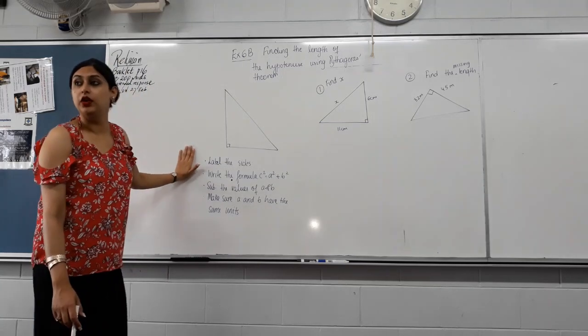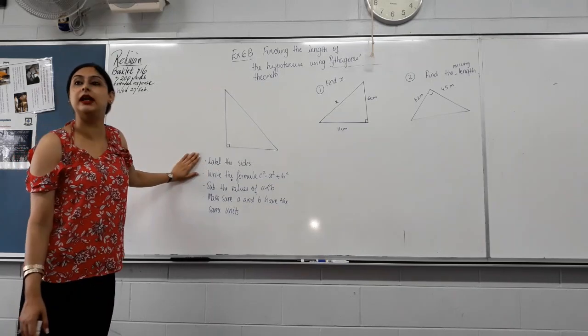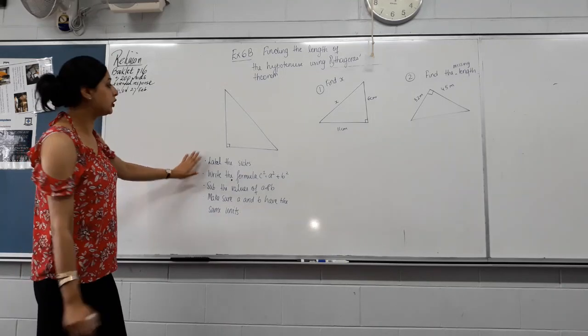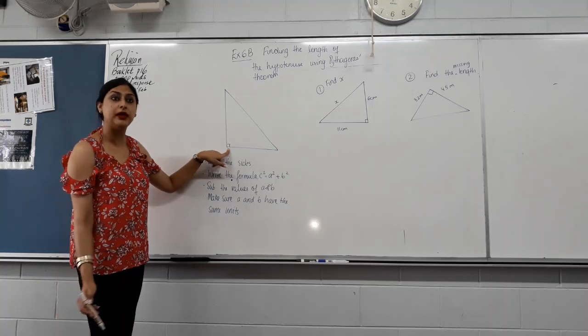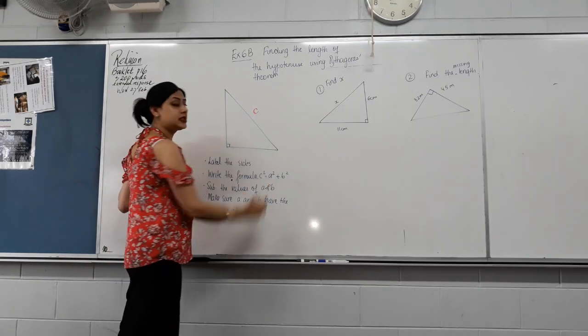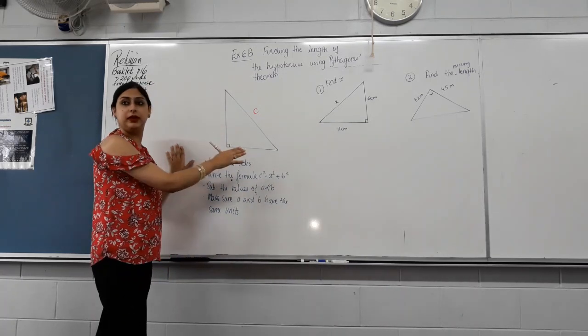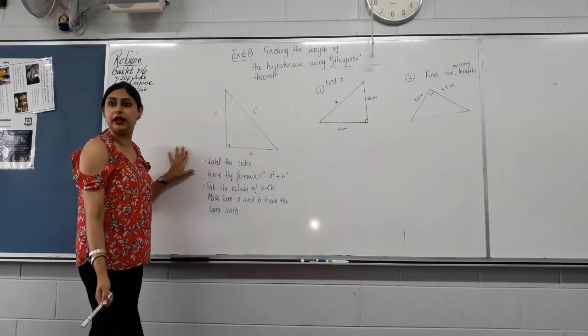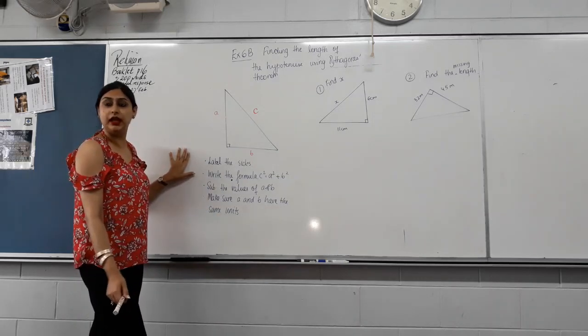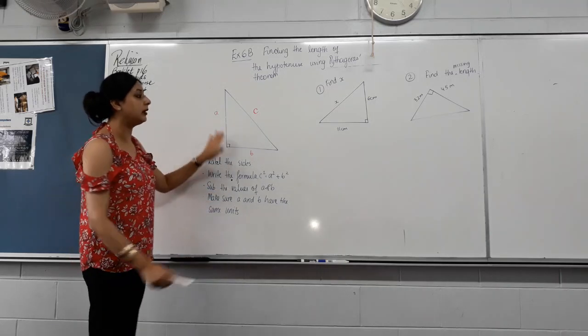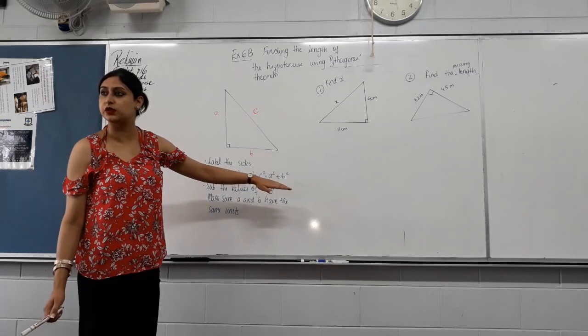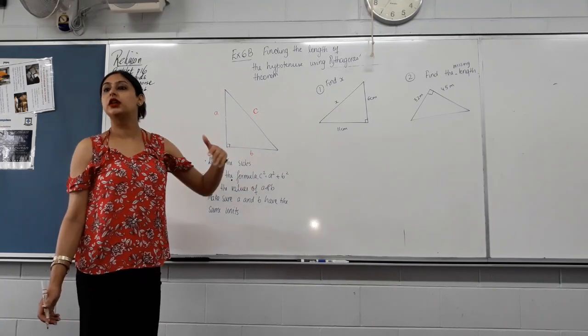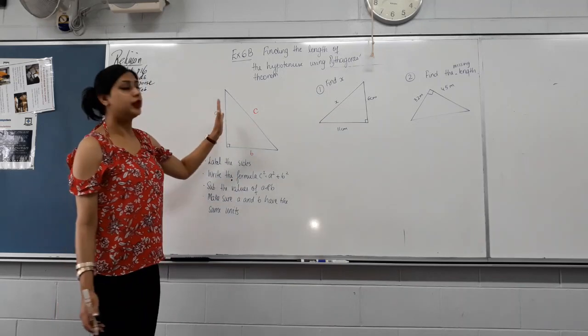So these are the steps that you must follow to find the length of the hypotenuse. First thing you do is label the sides. The first side you label in your right-angled triangle is C, which is the hypotenuse. So you find where your 90-degree angle is. Pens down, please. The side opposite to it, you label that as C. Doesn't matter which is A and B then? No, A and B can be anything. Then we write the formula. We learned about the Pythagoras' theorem's formula. Then we substitute the values of A and B. And we make sure that A and B are in the same unit. So if A is in centimeters, B must be in centimeters as well. Or they should both be in meters or millimeters. Any unit, but they have to be the same. If it's not the case, then you convert one of them.